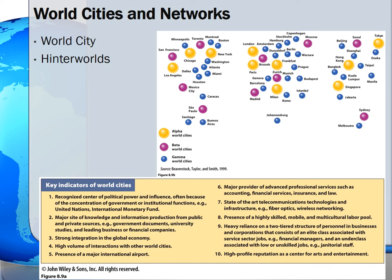Alpha world cities had the greatest overall dominance in these sectors, followed by beta world cities, and then gamma world cities.